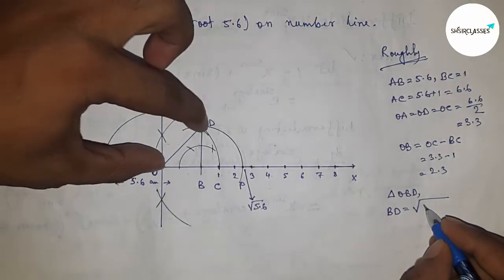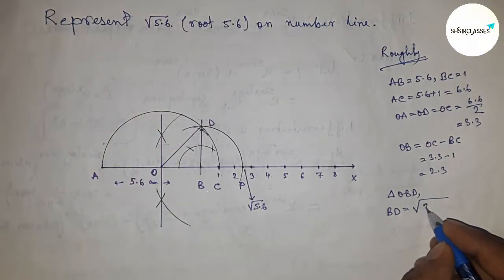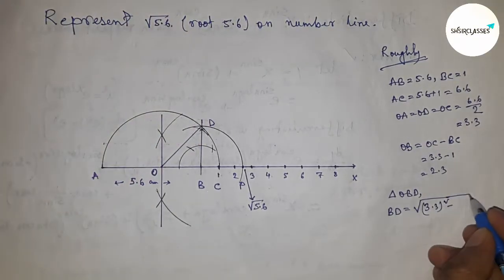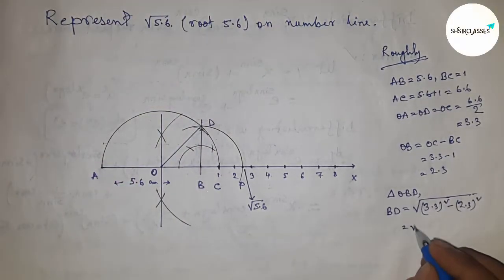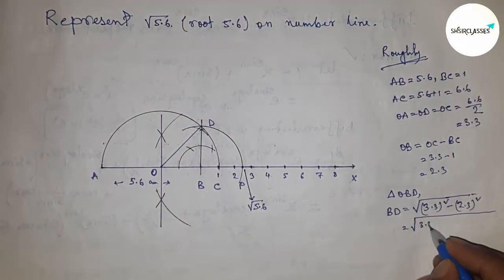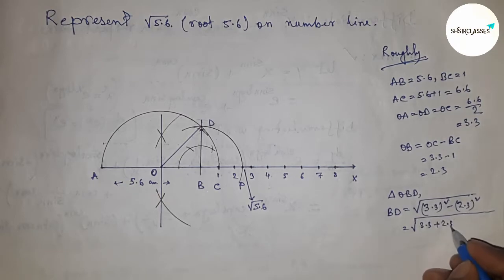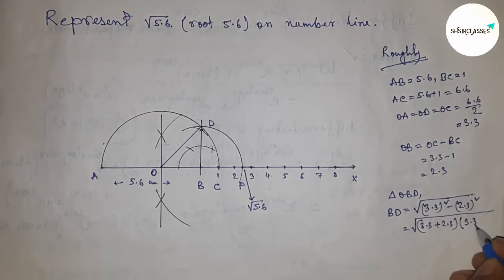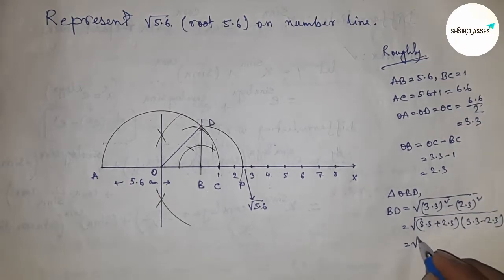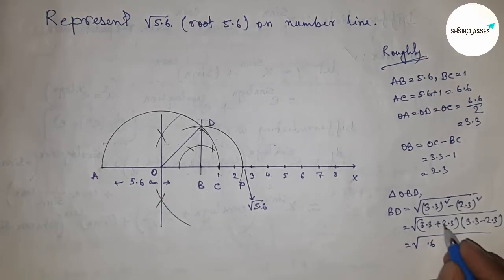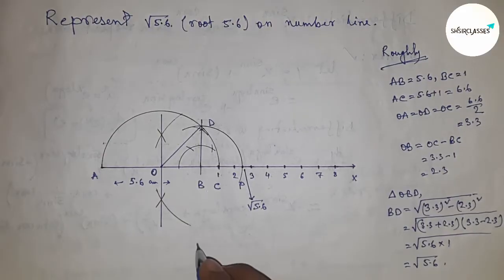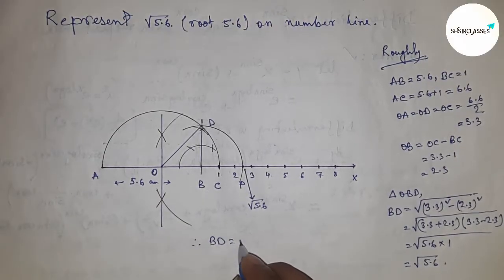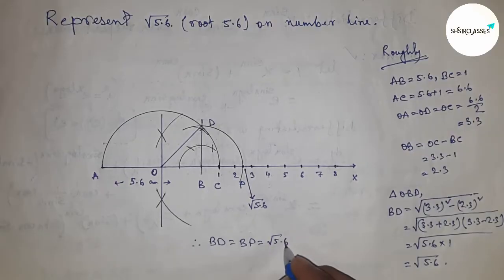In triangle OBD, it is a right angle triangle, so applying the Pythagorean theorem: BD equals root over OD squared minus OB squared. Substituting the values and applying the difference of squares formula (a squared minus b squared equals (a+b)(a-b)), this simplifies to root over 5.6. Therefore BD equals BP equals root over 5.6.